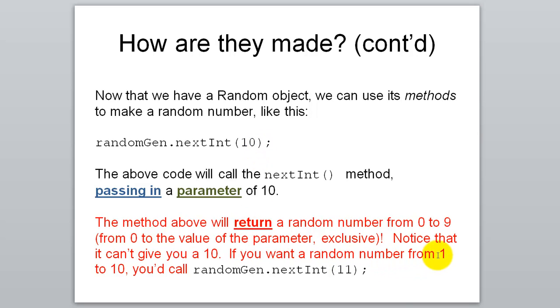If you want to get a random number from 1 to 10, you'd have to call randomgen.nextInt 11. So that would give you the possibility of returning a 10. So just keep in mind, whatever number you pass in here isn't actually possible to get back as a random value.